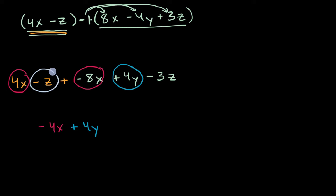And then last but not least, we have a negative Z here. We're subtracting Z. And now we're subtracting three more Z's right over here. So in total, we're going to subtract. We're subtracting a Z and then subtracting three more Z's. We're going to subtract four Z's. So minus four Z. And we are done.